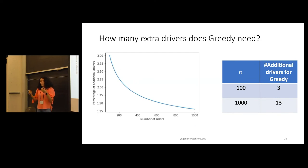So now it was all about theory. What happens with the smaller ends that are more reasonable, maybe, in practice? So here I'm showing you a plot where on the x-axis I have the number of riders, and on the y-axis I'm showing you what percentage of more drivers do I need so that greedy beats omniscient in the balanced market. So, for example, for n equal to 100, only three additional drivers is fine. And for n equal to 1,000, 13 additional drivers is fine for greedy to beat the omniscient.